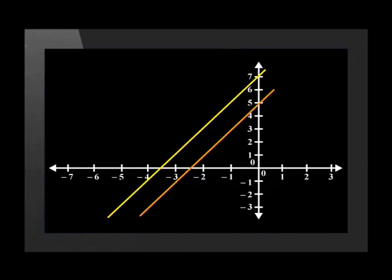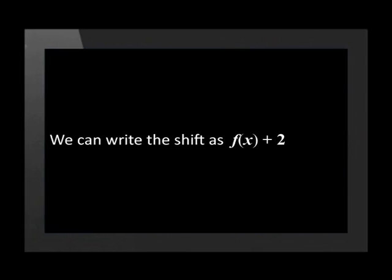Here is the plotted graph. As you can see, it is 2 units higher than the original graph. The x coordinates have remained the same, but the y values have been moved 2 units up. The y intercept for f was at 5. The new intercept after the shift is now at 7. This shows us that all points have moved 2 units up. We can write the shift as f of x plus 2. Let us look at one more example.